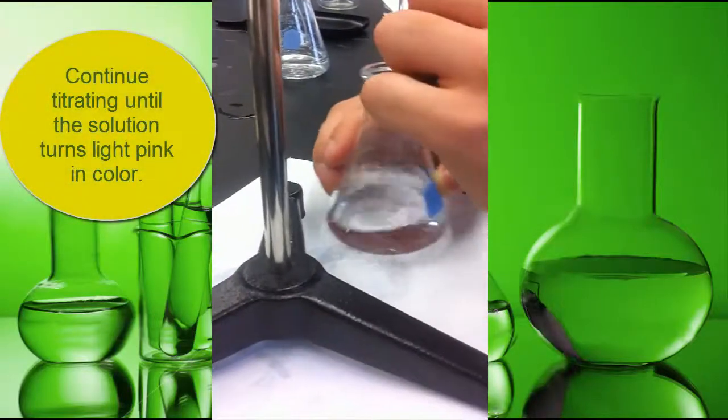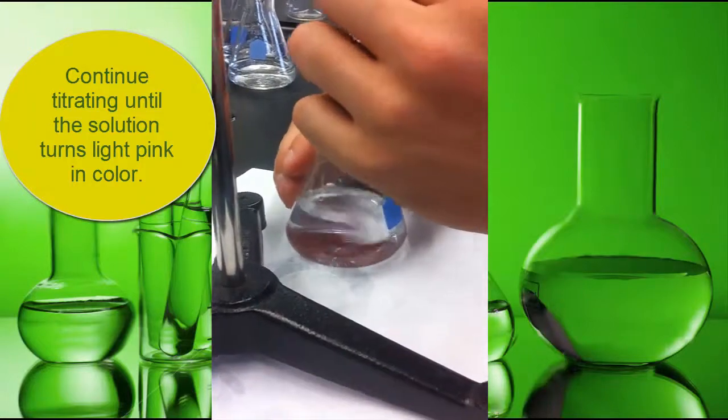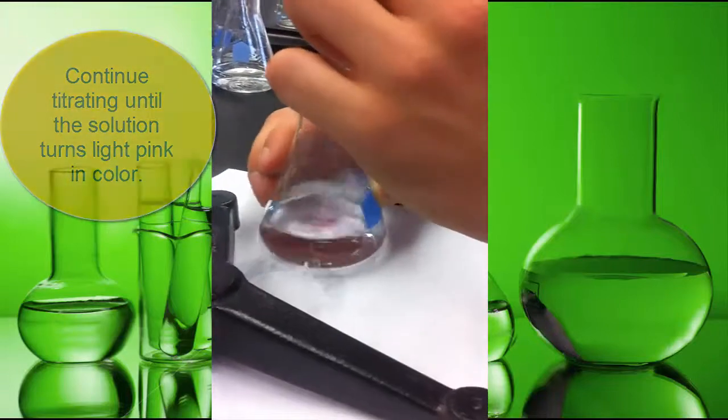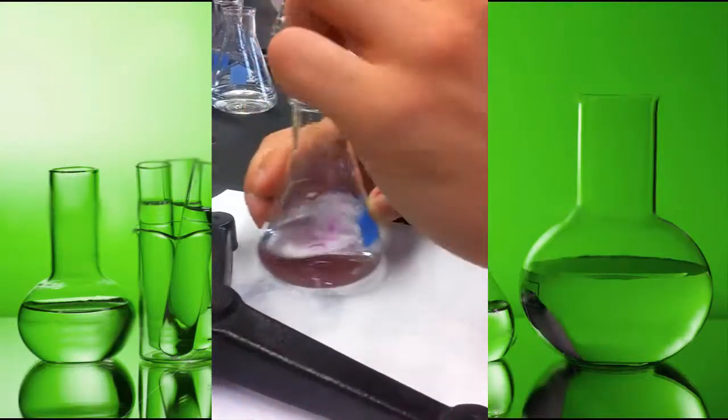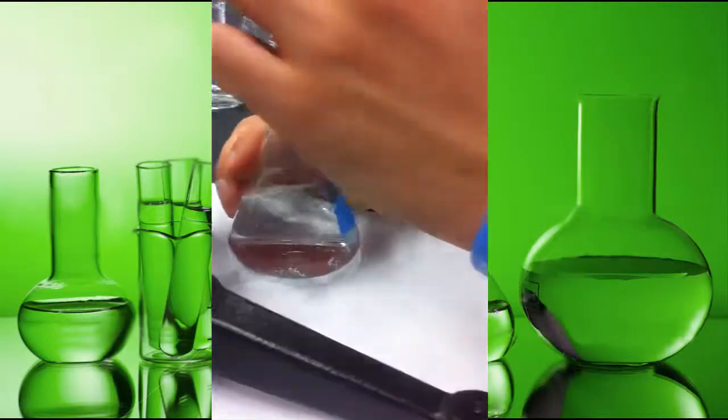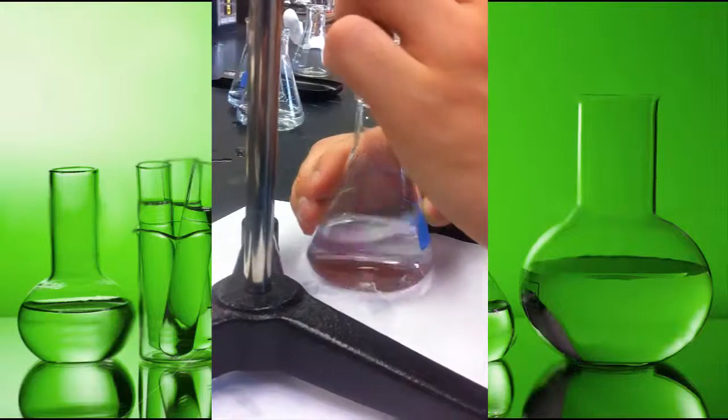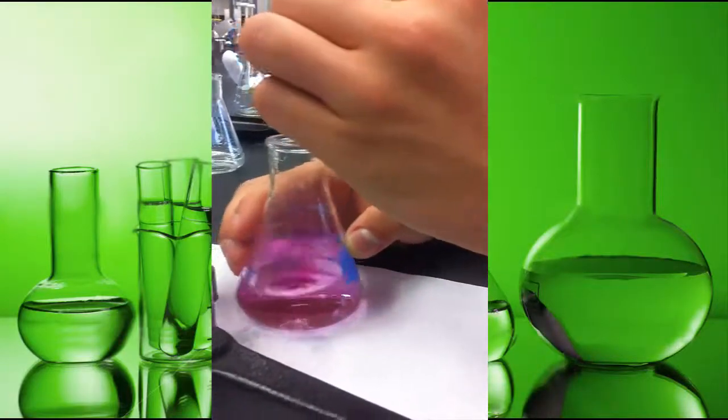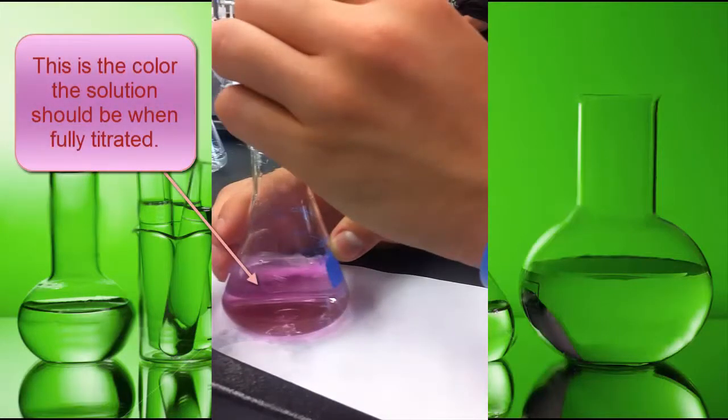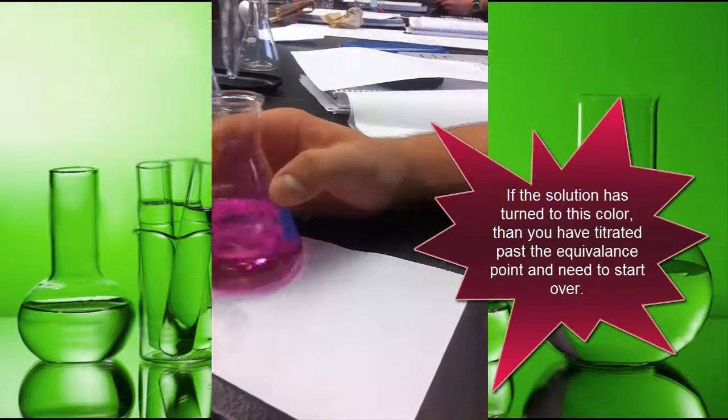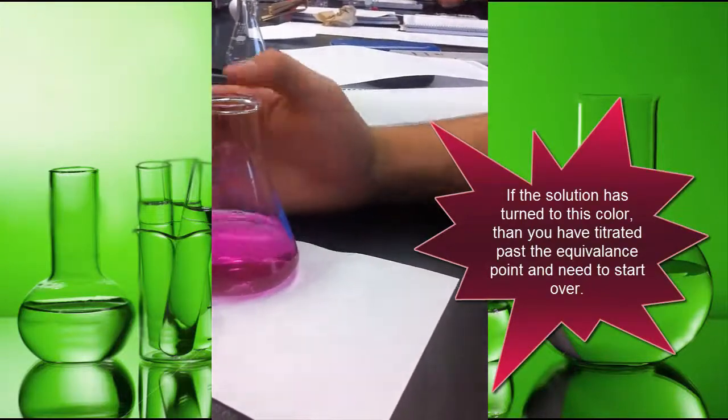Continue titrating until the solution turns a light pink color. This is the color the solution should be when it's fully titrated. If the solution has turned to this color, then you know you have titrated way past the equivalence point and need to start over.